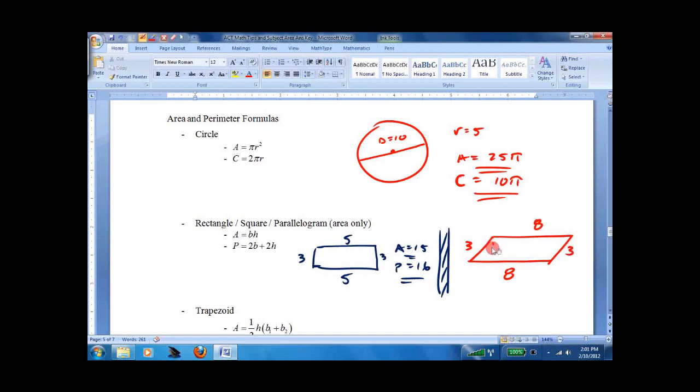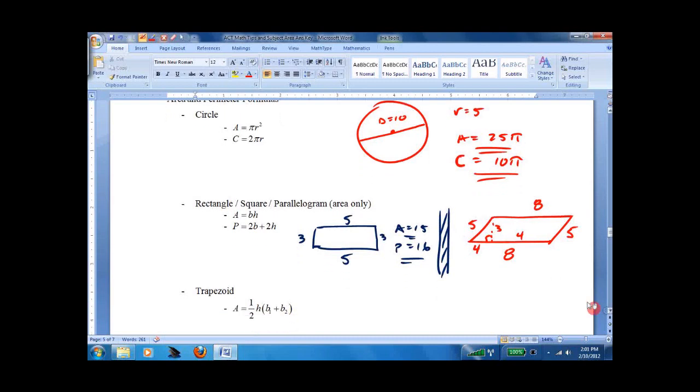And they'll do things like say the rest of this is 4. Then you would know that this is also 4. And actually, I'm going to change the problem so it'll look like something more like on the exam. And you have to find the height. In this case, the height would be 3 because that's 3, 4, 5. So the area would be simply base times height, 8 times 3, 24.